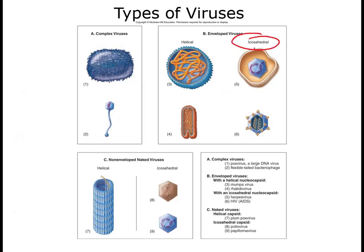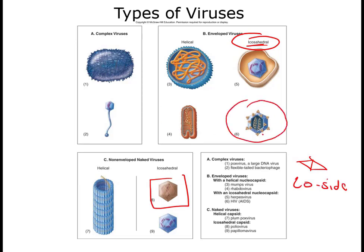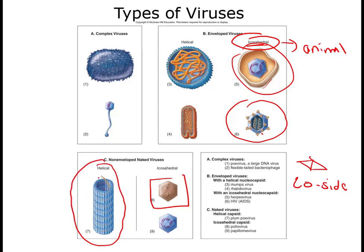The first shape is icosahedral, which you'll see most often. An icosahedral virus almost looks like a soccer ball — a bunch of triangles forming a 20-sided figure. Here's a naked icosahedral virus with spikes visible, and here's an enveloped icosahedral virus where the capsid is the 20-sided triangular shape with an envelope surrounding it. Most viruses that affect humans or other animals fit into this category.